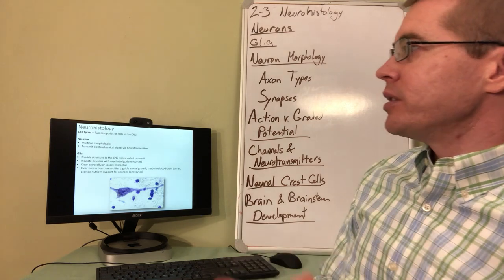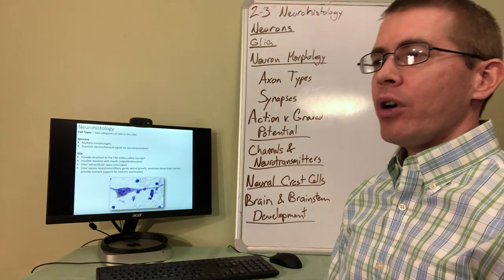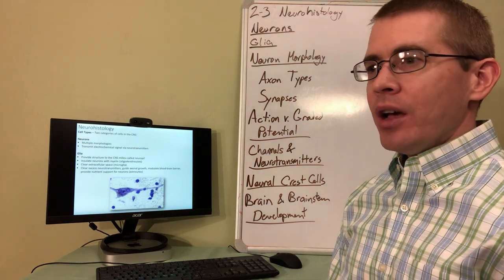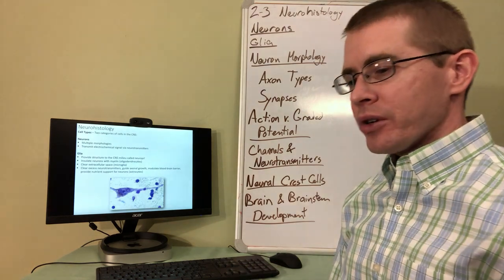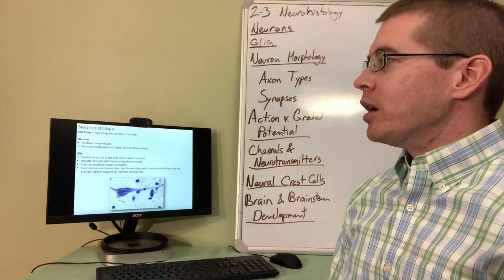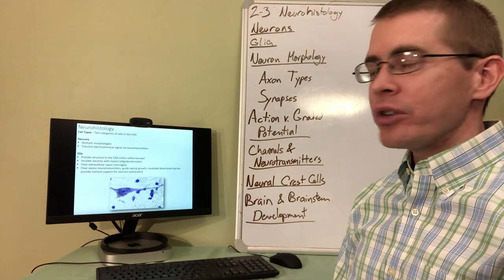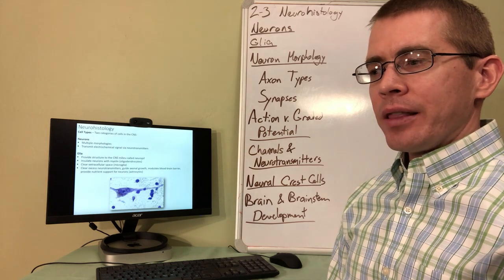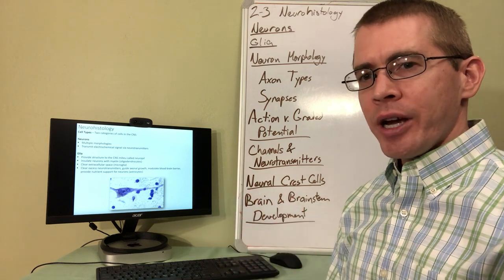Within the central nervous system there are two main types of cells: neurons and glia. We all think about neurons when we think about the central nervous system because they transmit action potentials and store memories. There are multiple different morphologies of neurons and we'll talk about all of those as the class progresses. Glia form a large portion of the brain — in fact there are likely two to ten times as many glia as neurons depending upon the region.